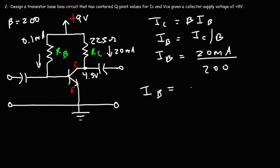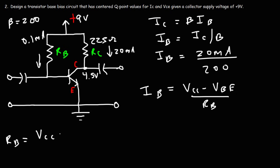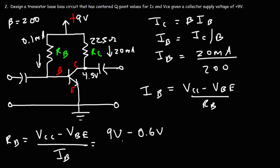To calculate RB, we use the formula: IB equals (VCC minus VBE) divided by RB. Rearranging: RB equals (VCC minus VBE) divided by IB. VCC is 9V, VBE is 0.6V, and IB is 0.1 milliamps. So this is 8.4 divided by 0.1, giving RB equal to 84 kΩ.